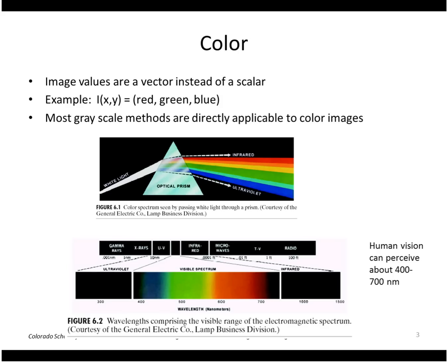Most grayscale methods are directly applicable to color images. This picture shows the spectrum, how it is split out from incoming white light, and human beings can perceive this range of the spectrum from about 400 nanometers to about 700 or 780 nanometers.